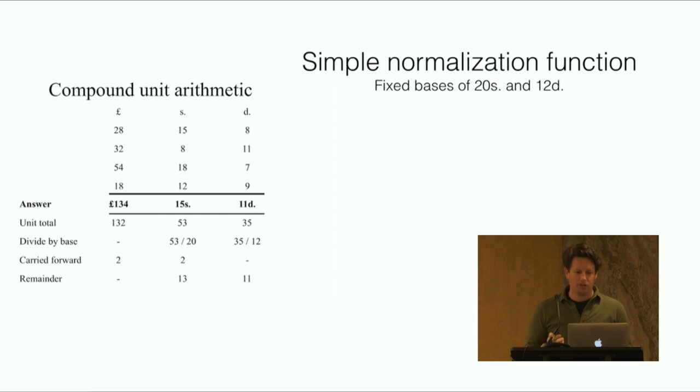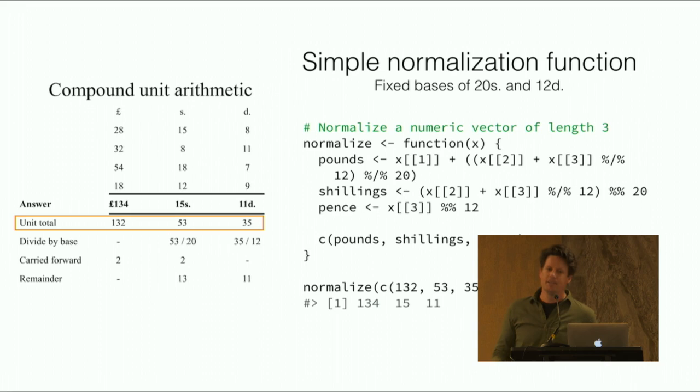What we want to do in a situation like this is take these totals which are just added up and then normalize them - do the compound unit arithmetic to get the answer we want. You can make what I'm calling a normalized function which takes a vector of length 3, the amount of units we have, and then normalizes them using remainder division essentially and brings them all together.